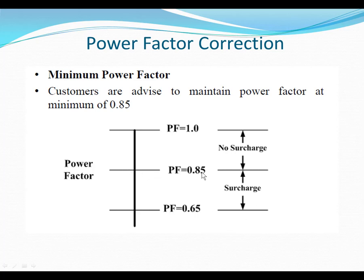For high voltage consumers, the power factor threshold is a bit higher. High voltage consumers must maintain a power factor above 0.9. If it falls below 0.9, there will be a penalty by TNB. If the power factor is higher than 0.85 for medium and low voltage, or 0.9 for high voltage, there is no surcharge.